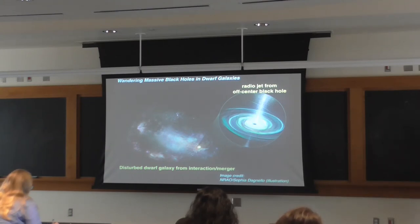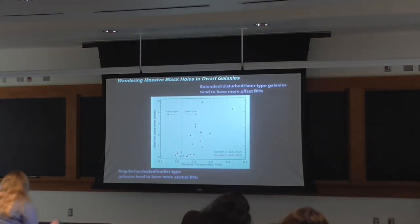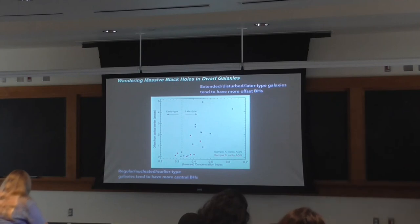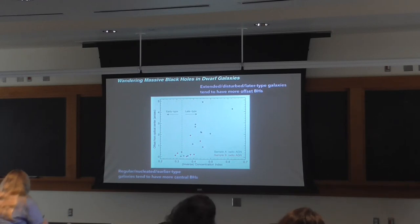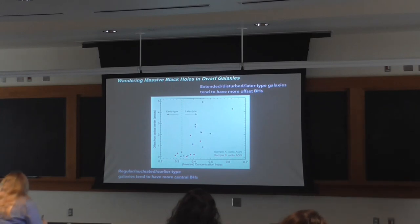We see a trend where more extended, disturbed, later-type galaxies tend to have more offset radio sources, while more centrally concentrated earlier-type galaxies have less offset radio sources. In other words, if a galaxy has a regular morphology and a well-defined nucleus, the AGN sits right where you'd expect it; if the galaxy is more disturbed or merging, the black holes tend to be offset. This supports the idea of black holes being flung out during mergers, as shown in a plot of radio-optical offset versus inverse concentration index — the ratio of half-light radius to 90 percent light radius.